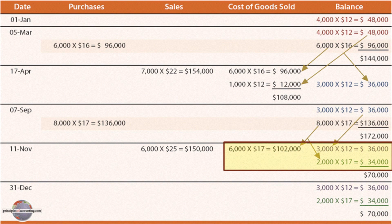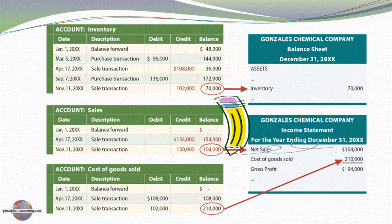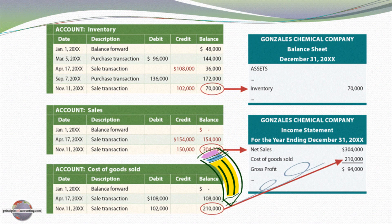On November 11th, we sell 6,000 units. Those 6,000 are all assumed to come from the last purchase, which contained 8,000 units. So 6,000 of those 8,000 units are sold, and the other 2,000 stay in inventory along with the 3,000 carried forward. At each purchase and sale date, we adjust our carrying stock to reflect what's on hand, peeling away on a last-in, first-out basis. Tabulating the totals: $70,000 is in ending inventory on the balance sheet, $304,000 was the dollar value of sales on the income statement, and cost of goods sold contains $210,000.